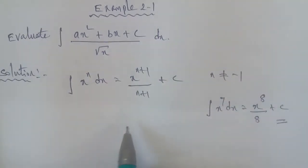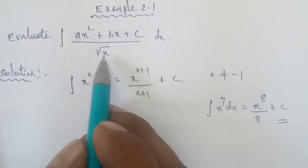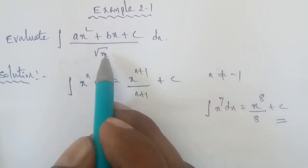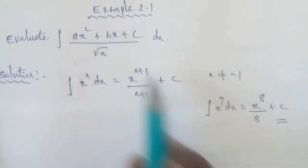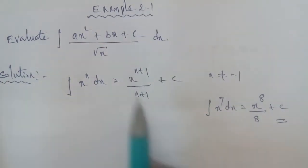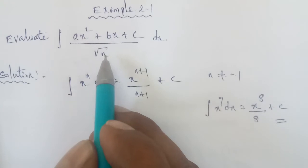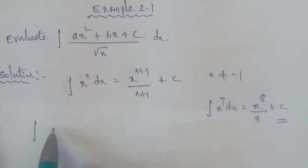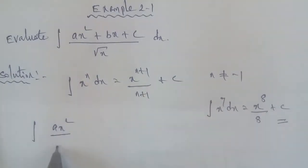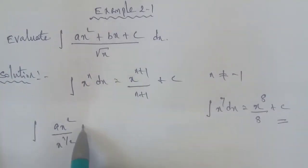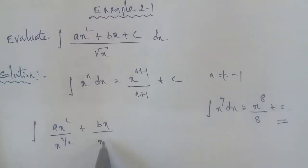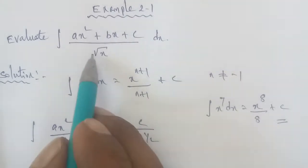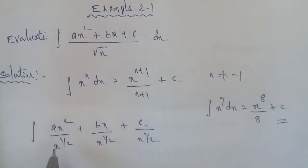Now for root x: root x is equal to x power of 1 by 2. So we rewrite the integrand. We have ax² divided by x power of 1 by 2, plus bx divided by x power of 1 by 2, plus c divided by x power of 1 by 2. This is the common root x denominator divided across all terms.